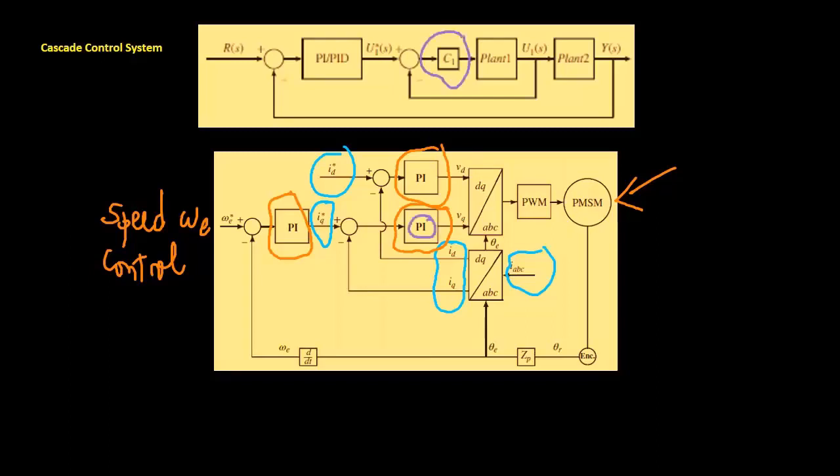The internal current loop controller can be either a proportional controller, as shown in our previous video, or a PI controller, which we'll be discussing today.